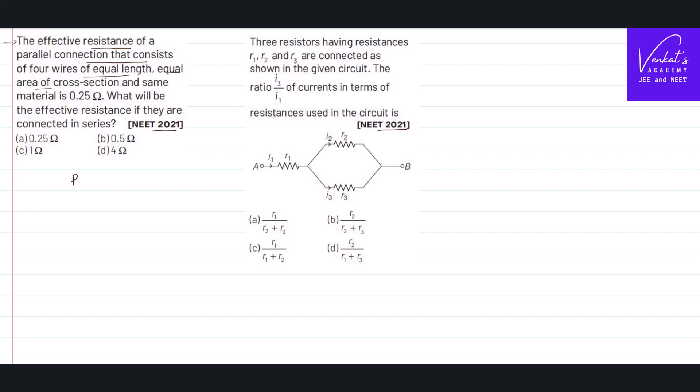We know the resistance of a wire R equals ρL/A. If they are made up of same material, ρ is same. It is given that their length is same, their area of cross-section is same, which means R is same for all of them.